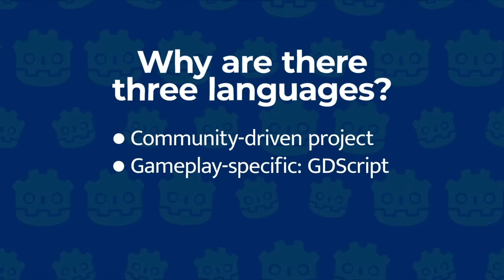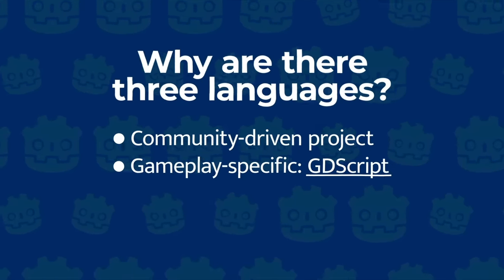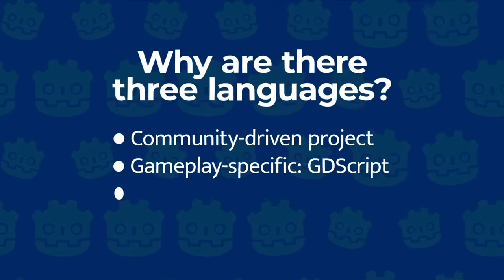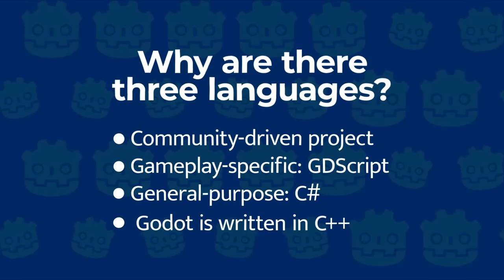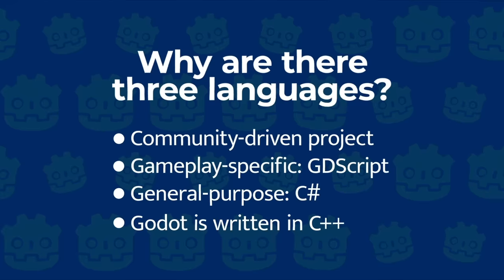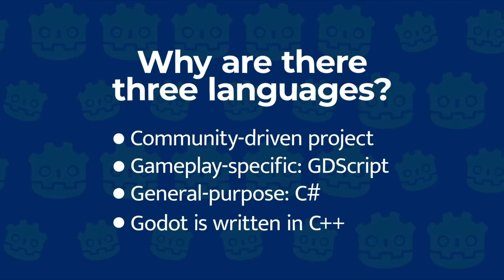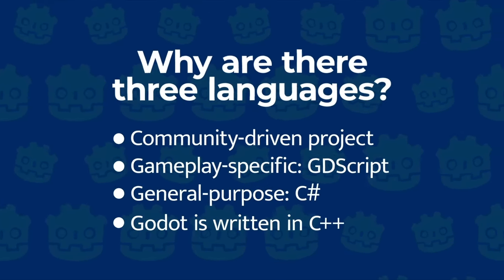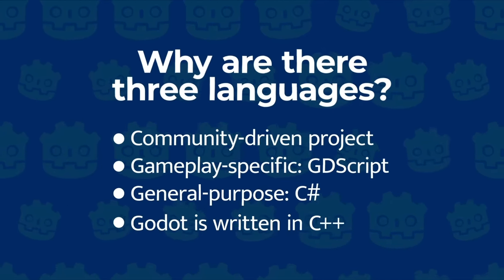Godot has its own gameplay-specific language, GDScript, and thanks to a generous sponsorship from Microsoft, the team could also support the general-purpose language, C#. Finally, since Godot is written in C++, there is also support for it. C++ is a popular choice in game development for performance reasons. All three languages — GDScript, C#, and C++ — are here to stay.